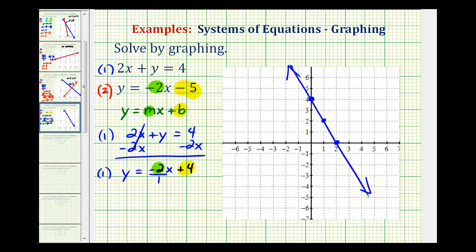And now we'll graph the second line, the red line, where we have a y-intercept of negative five. And the slope is negative two, or negative two over one, so we'll go down two units and right one unit, down two, right one. And now we'll sketch this line.